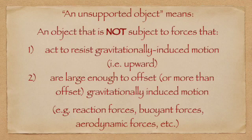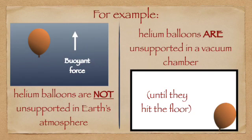Before we go any further, I need to define a particular term that I'm going to be using a lot during this video. An unsupported object is an object that is not subject to any upward forces that are large enough to offset or more than offset gravitational influence. To address a favorite FLURF example, helium balloons in Earth's atmosphere are not unsupported. They are subject to an upward buoyancy force. They are supported by the atmosphere.